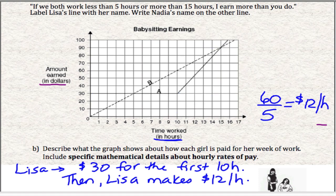Nadia's line demonstrates direct variation. Nadia's line is the dotted line, and it starts right down here at 0. So it wouldn't be too hard for us to figure out how much Nadia is paid per hour.